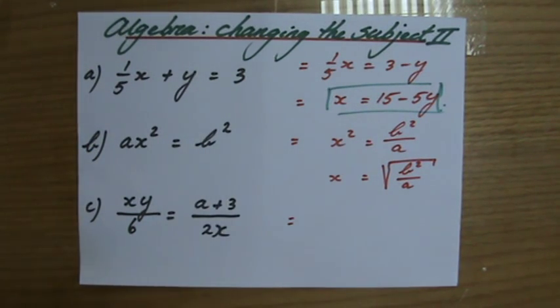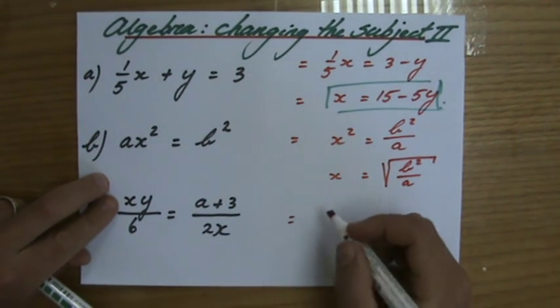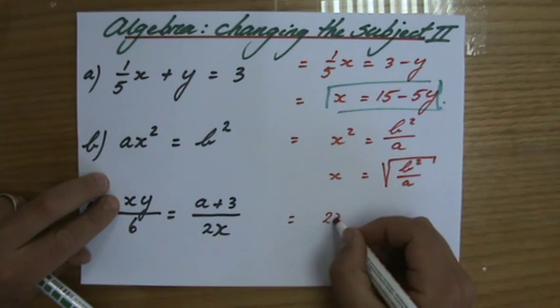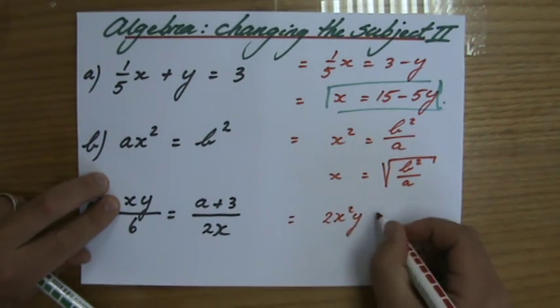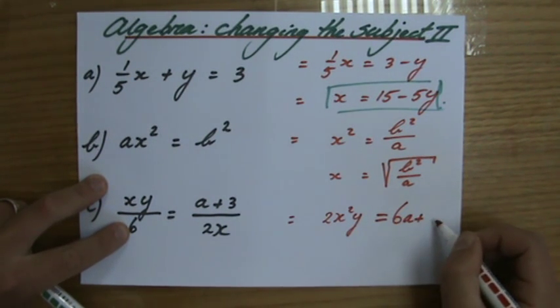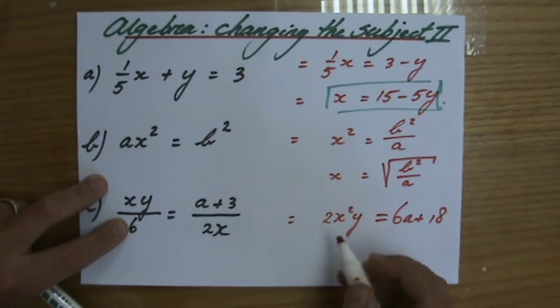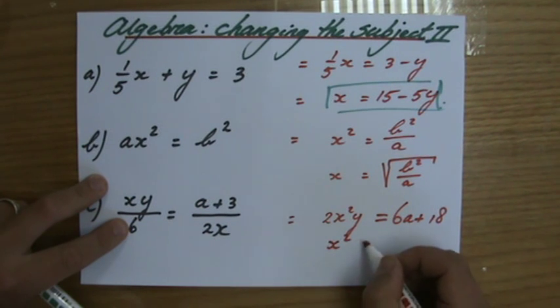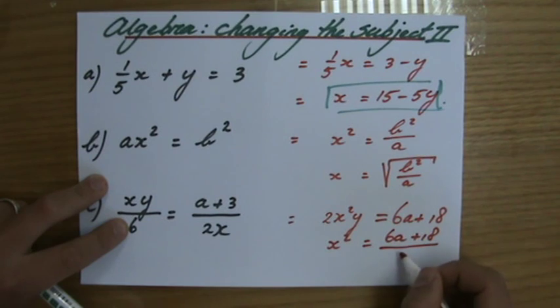Now here I have a fraction equals a fraction. You could do some cross multiplication if you like, so it's going to say 2x²y equals 6a plus 18. Don't forget to multiply that 3 by 6 as well. Now I'm going to divide both sides by 2y, so x² equals 6a plus 18 divided by 2y.